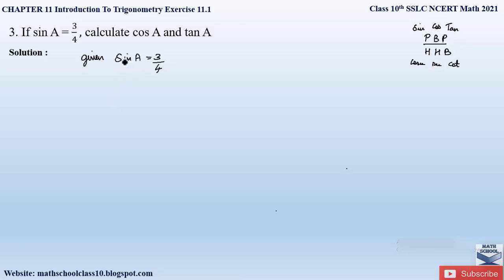So sin A equals perpendicular by hypotenuse. Its value is given here as 3 by 4, so our perpendicular value is 3 and our hypotenuse is 4 in the given triangle.